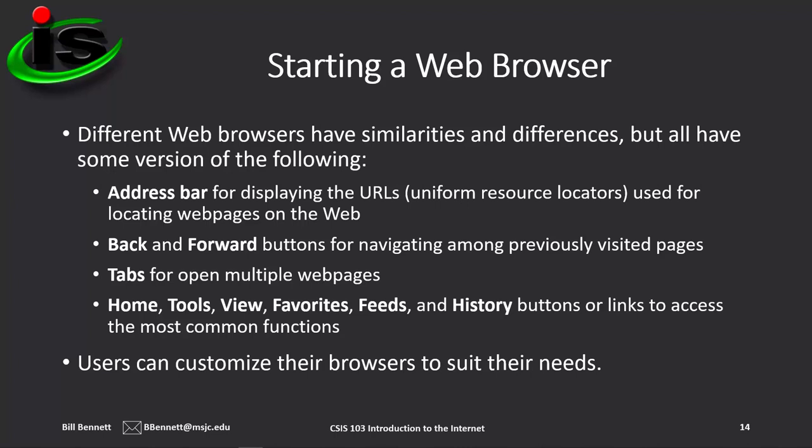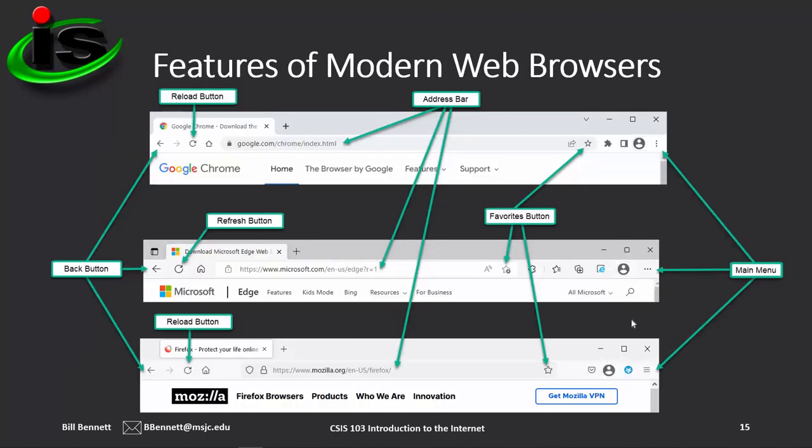Users can also customize their browsers to suit their needs. Looking at the common elements in Chrome, Edge, and Firefox: starting on the left, you can see the back button. Just to the right is the forward button — in Edge, the forward button doesn't display unless you've already viewed multiple pages. Next is the reload button, called refresh in Microsoft Edge. Then you have the home button, and next to that is the address bar, where you type in the web address or search information.